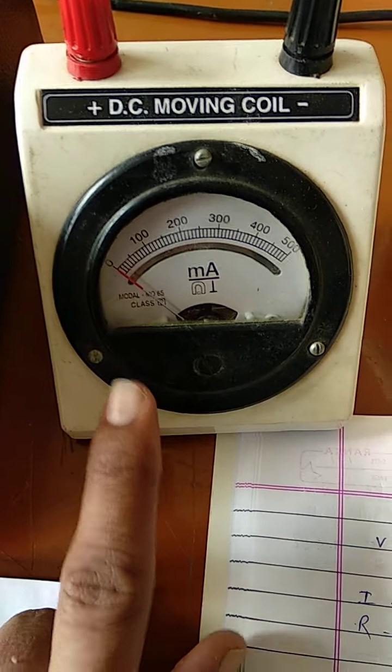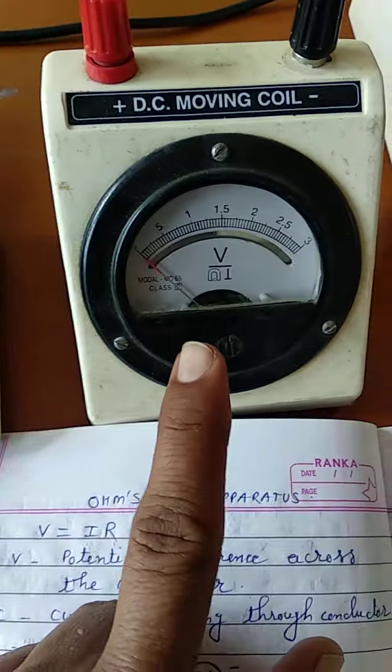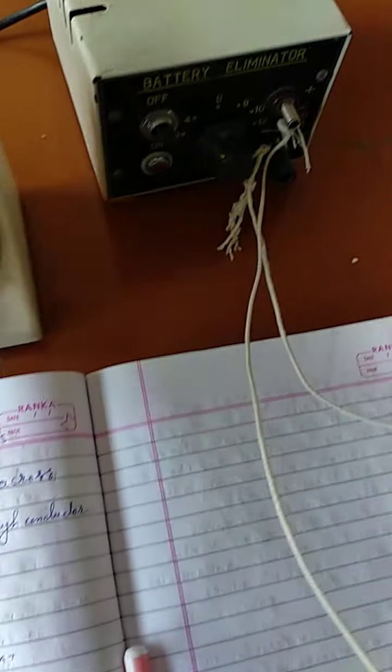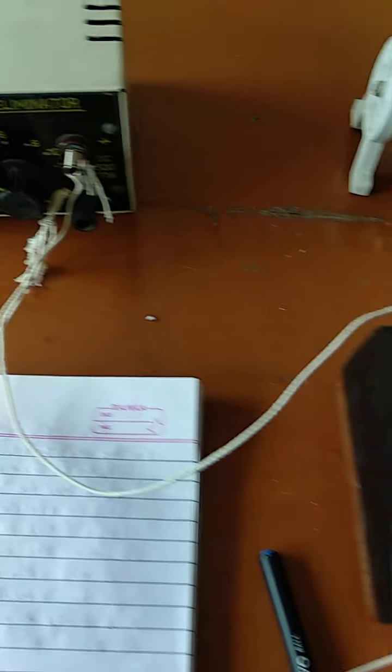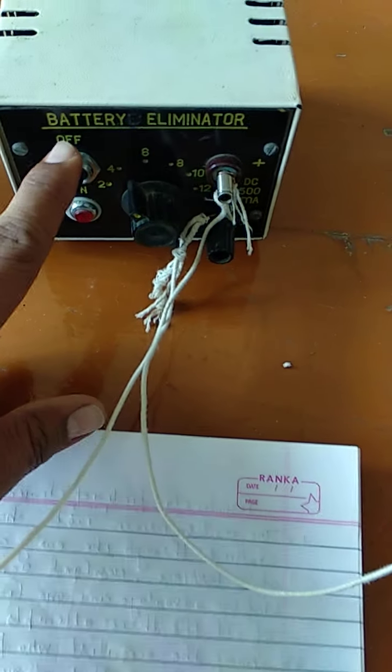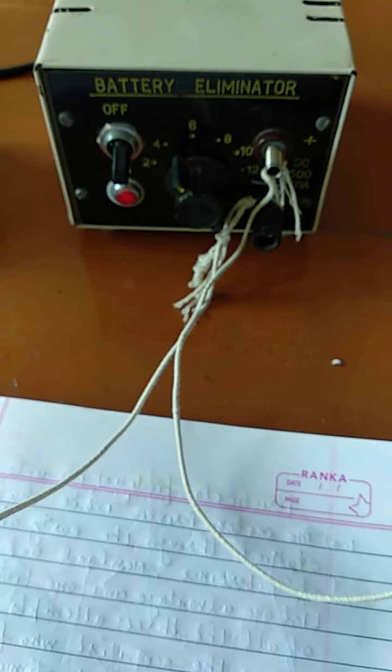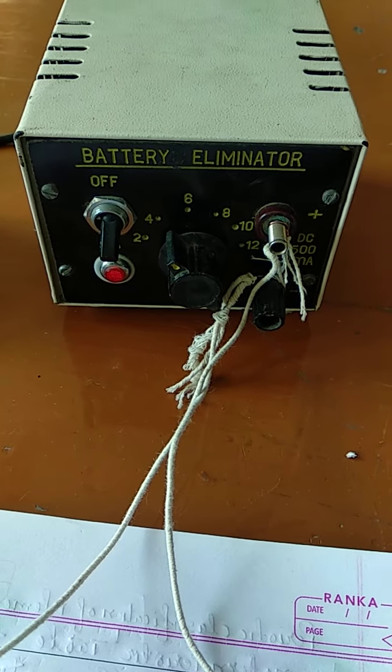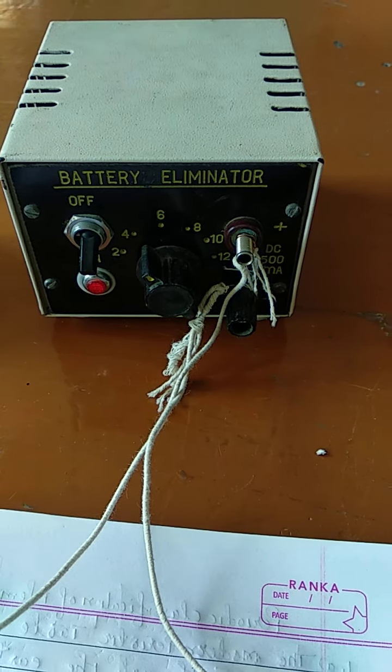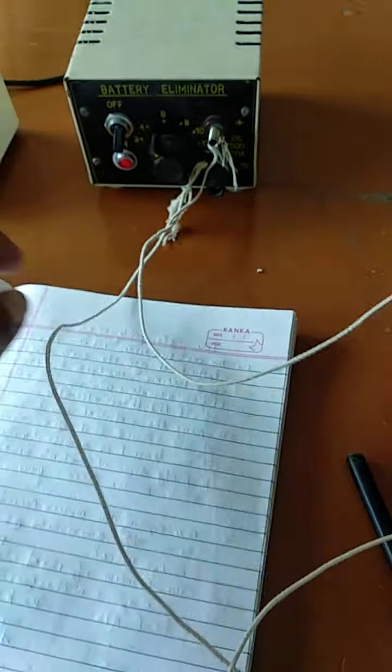You can see here. These are the instruments which I have used. This is milliampere. This is voltmeter. I have another experiment for you also. For connecting all these things in a process, in a circuit diagram. So I am just making it on. This is battery eliminator. You can see here on the reading. 2 volt. 4 volt. 6 volt. 8 volt. 10 volt.